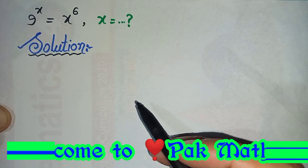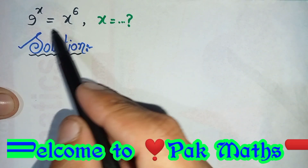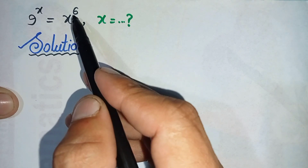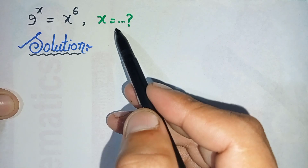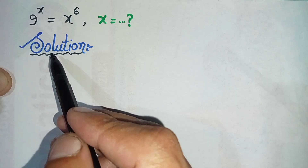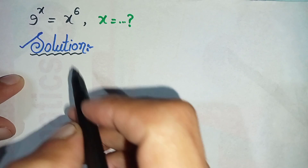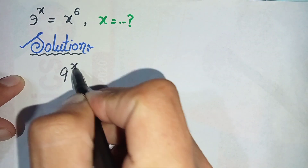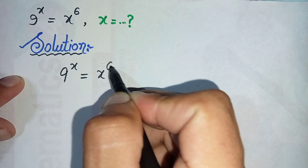Hello everyone, welcome to Parkmas. In this video I'm going to solve this nice math problem: 9 raised to power x is equal to x raised to power 6. We need to find the value of x. To solve this math problem properly, first we will write the solution and rewrite this question.